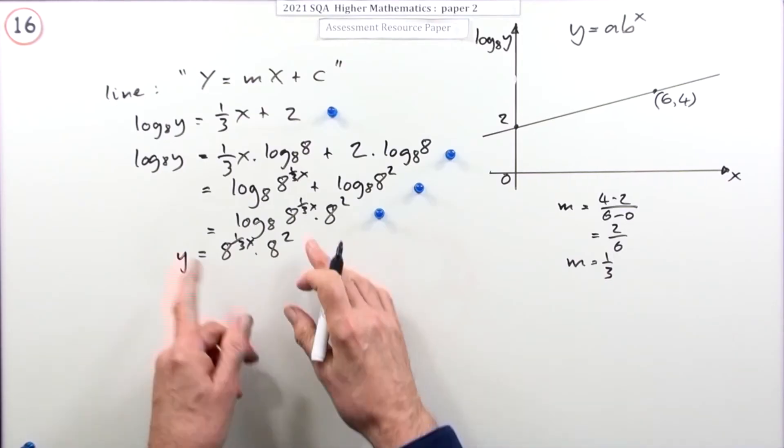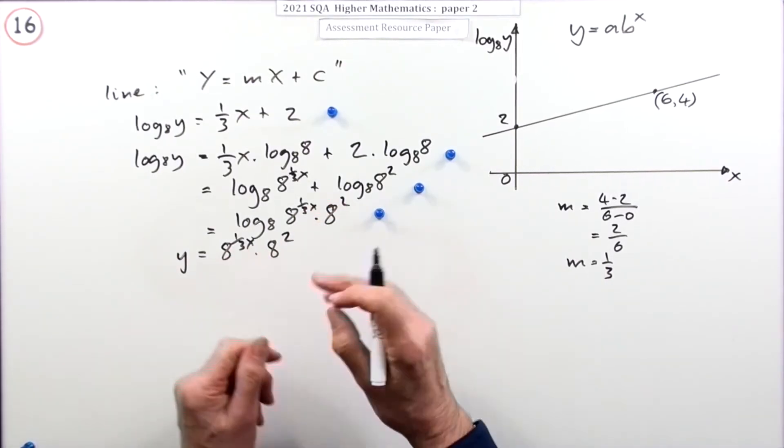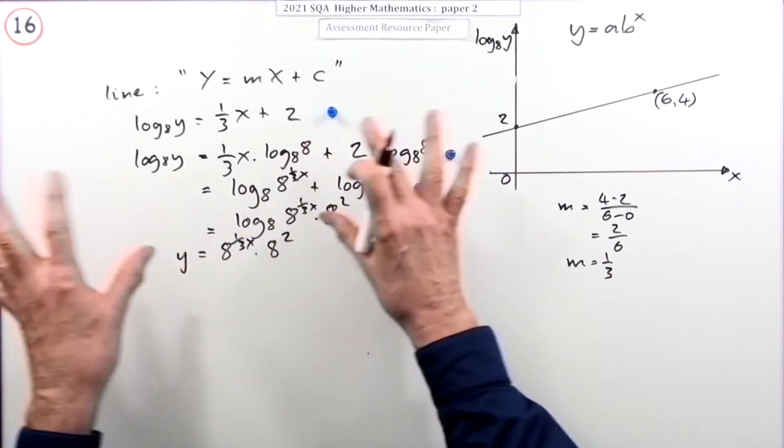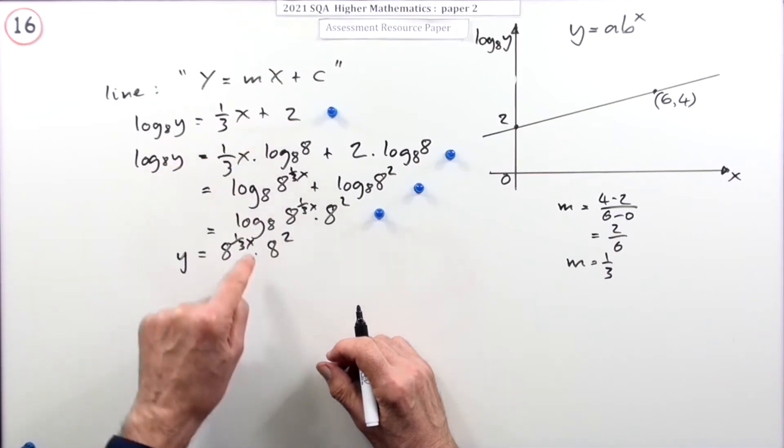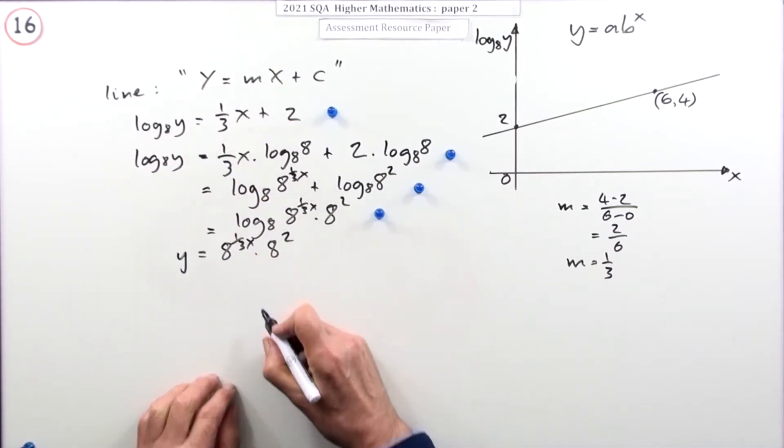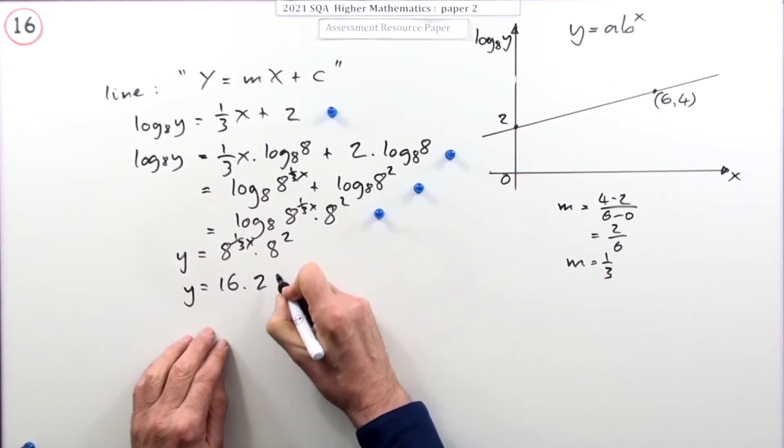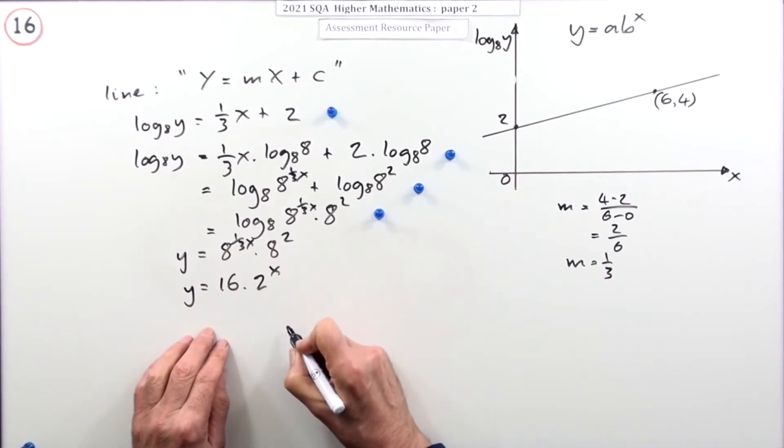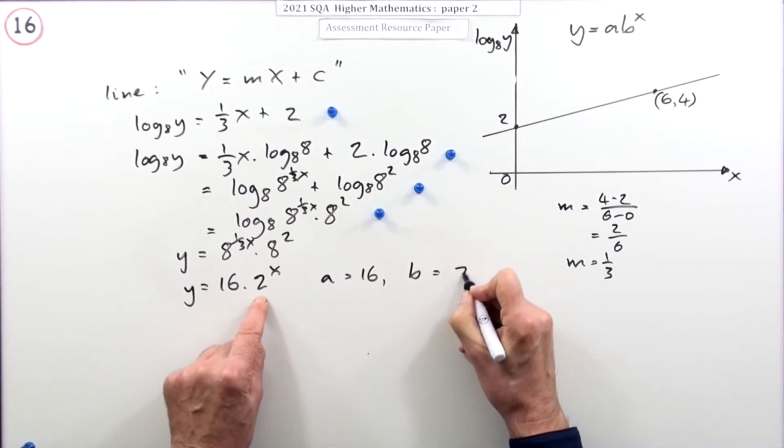Now, you're back to where you were. That may well be the way you've been shown to do it. If it is, and you're comfortable with it, then just do that. But, it just seems an awful lot of writing down. Instead of just doing the inverse and getting that 8 to the power of this, instead of way down here, just getting that straight up here. And, now I can just write that out. So, that's actually 16 times 2 to the power of x. And then, as before, a is the 16, b is the 2.